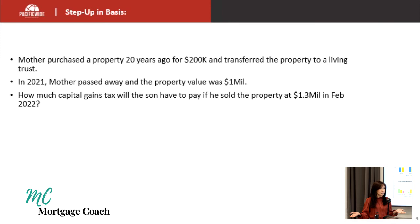Now let's look at what happens if the mom did not create a living trust and instead created a will. With a will, the son has to go through probate court to get the property, which can take six to twelve months. He'd have to pay a lot of court fees and attorney fees — around $100,000 to $200,000 in expenses. Not only that, when he sells the home for $1,300,000, his basis is only $200,000, not $1,000,000, because the mom did not create a living trust.